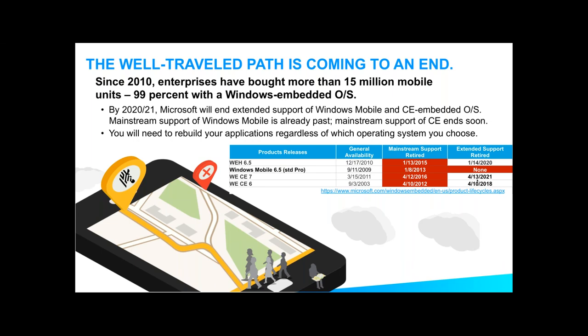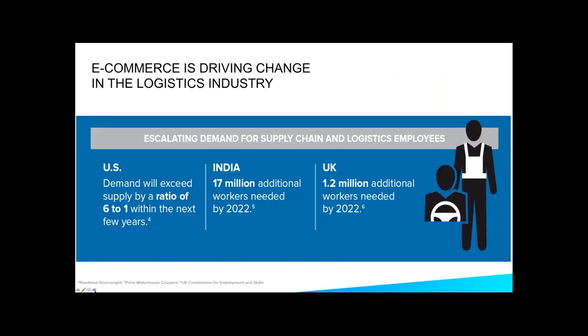A prime example would be military-type applications, where there has to be a chain of custodial support within every element of a supported system. Knowing that this chain of custodial support is going to be broken has caused the military to look at different avenues and operating systems going forward. This path is coming to an end. Another aspect driving this change in direction is the e-commerce industry.